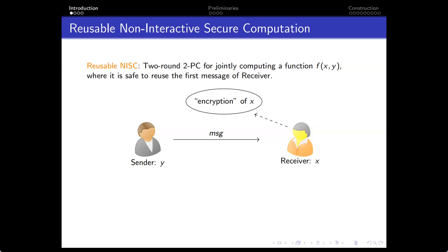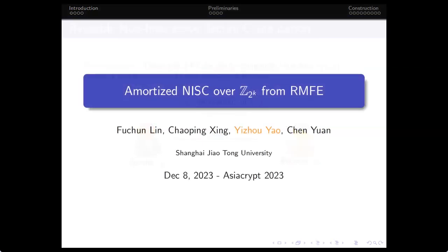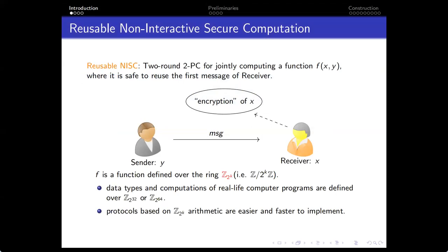We are interested in the reusable NIST-style secure protocol for jointly computing a function f(x, y), where it is safe to reuse the first message of the receiver. Essentially, reusable NIST allows the receiver to post an encryption of their input so that any sender can send messages to the receiver, who is then able to compute the evaluation of the function. In particular, we are interested in working over Z_{2^p}. The reasons are that data types and computations in real-life computers are defined over Z_{2^p}, and therefore it is straightforward to translate programs to circuits or functions over Z_{2^p}.